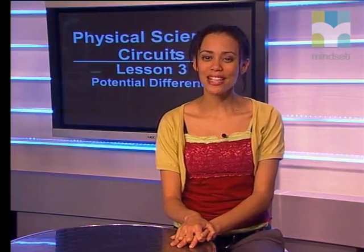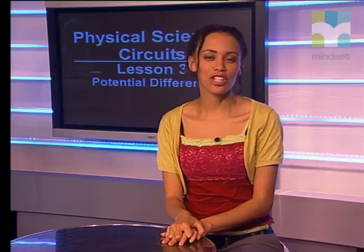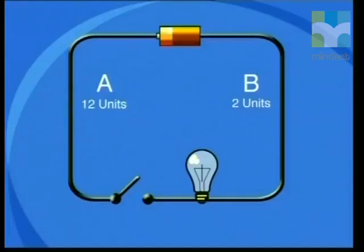Let's understand this by looking at an animated model of conventional current. By convention, the direction of the current is from the positive end of the battery, through the circuit, to the negative end of the battery — this is referred to as conventional current.